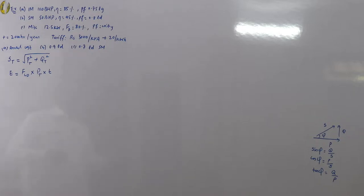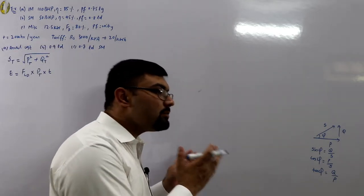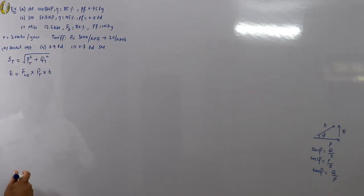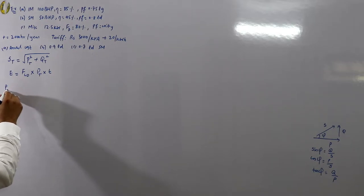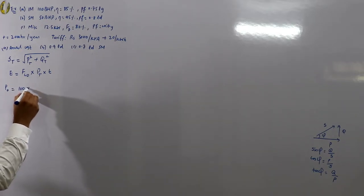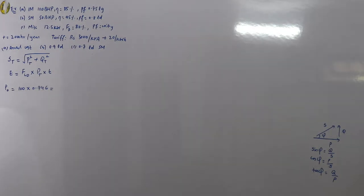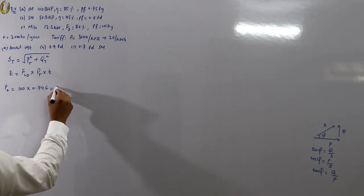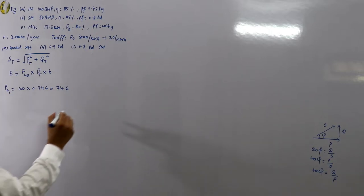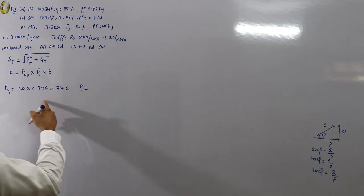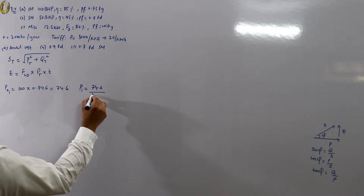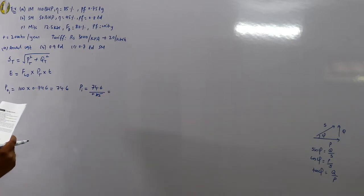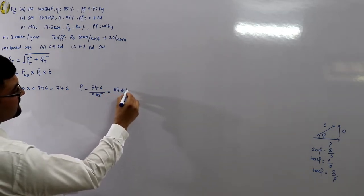The BHP values are the output of the motors, so we need the input. First, convert to kilowatts. For the induction motor, output power = 100 × 0.746 = 74.6 kW. Input power P_i = 74.6 / 0.85 = 87.6 kilowatts.